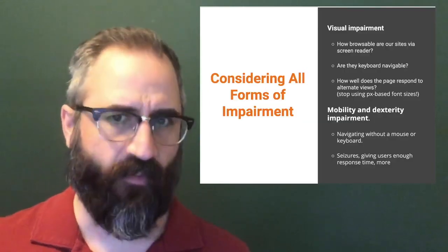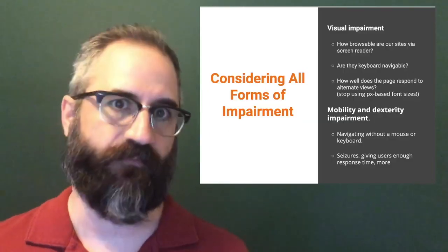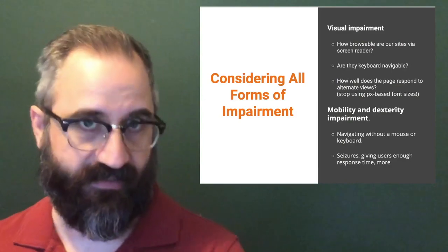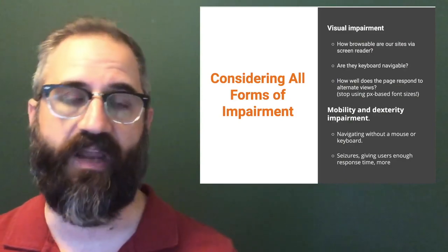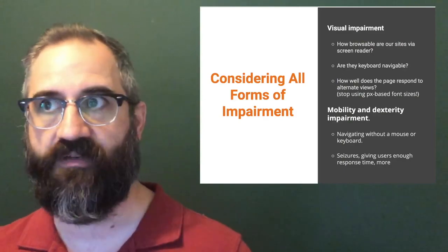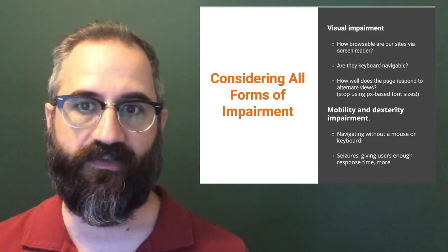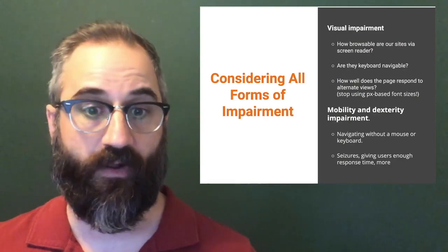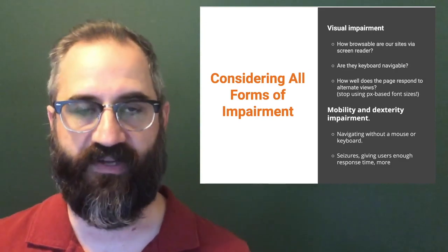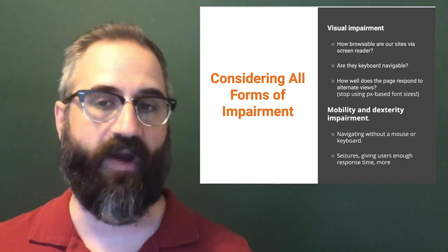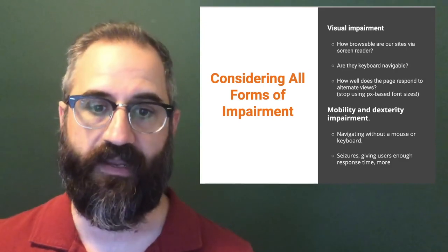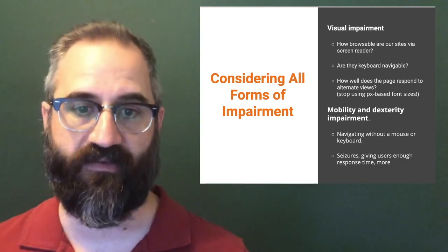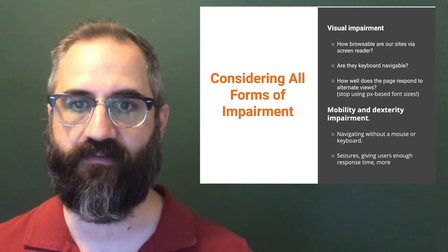So what forms of impairments are we talking about? Not just blindness, but we also need to make sure that people can use keyboards or alternative input devices to get around your website if they can't, for example, use a mouse or tap a screen.